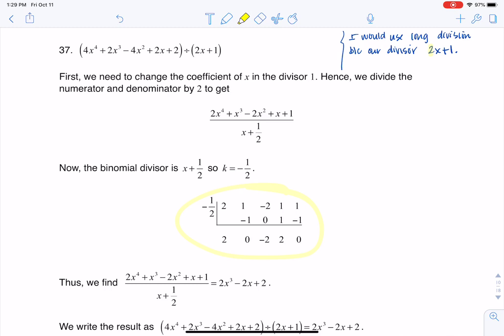So personally I wouldn't use synthetic division here, I would go long division. So let me rewrite this quotient and show you if you do opt to use synthetic division how you've got to go after this. So we've got our numerator of 4x to the 4th, 2x cubed, 4x squared, 2x plus 2 and our divisor of 2x plus 1. And really what I need is I need that coefficient to be positive 1.